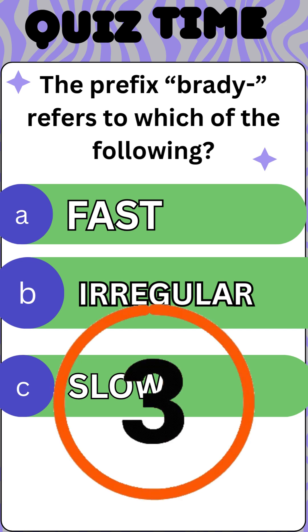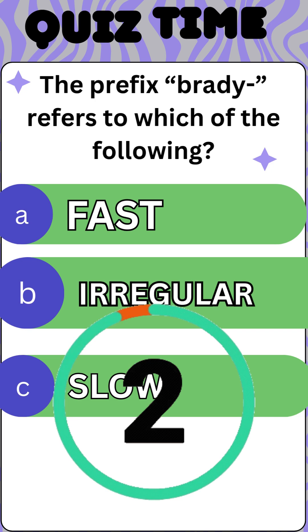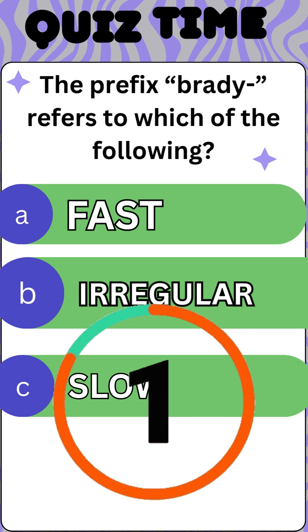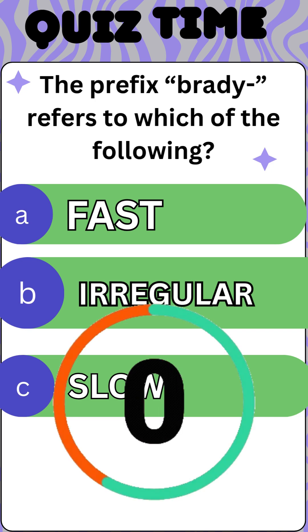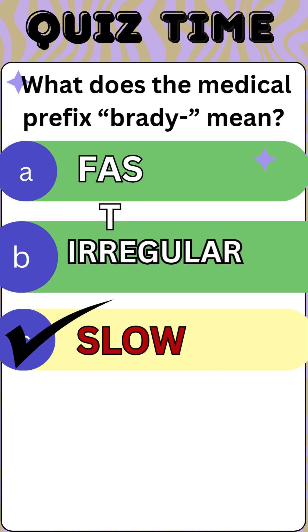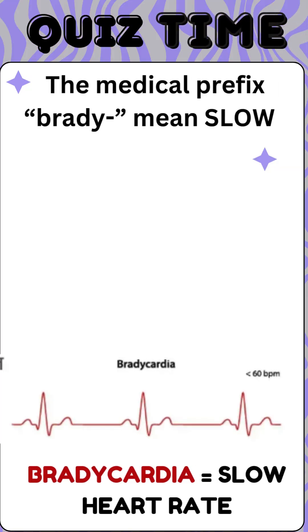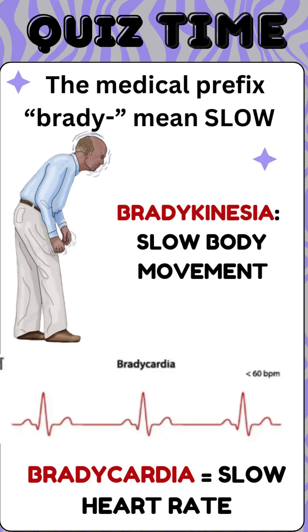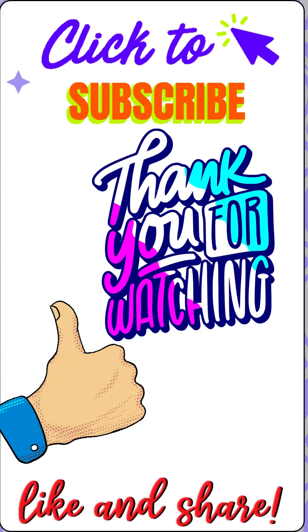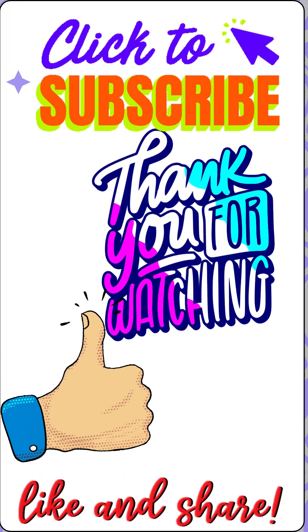Next, the prefix 'brady' refers to which of the following: fast, slow, or irregular? The answer is slow. For examples: bradycardia means slow heart rate, and bradykinesia means slow body movements. That's all, thanks for watching!